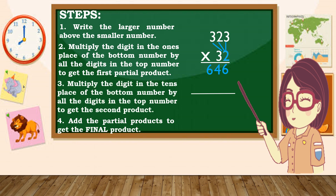Multiply the digit in the tens place of the bottom number by all the digits in the top number to get the second partial product. Ang next natin i-multiply ay ang number na nasa tens place, which is 3. Therefore 3 times 3 is 9. But wait, saan natin ilalagay ang 9? Itatapat natin ito sa number na nasa tens place, dahil ang i-multiply na natin ay nasa tens place.